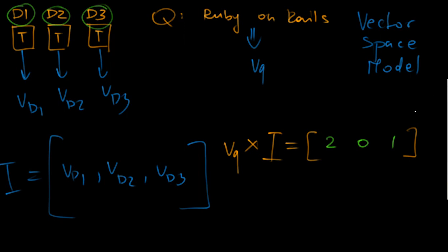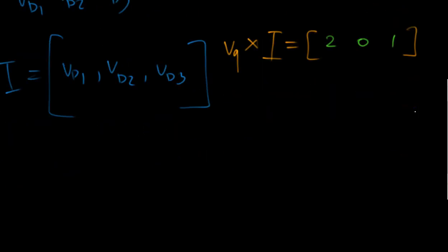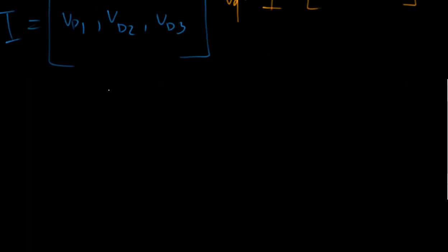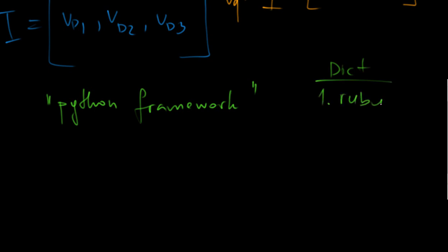Now you might be wondering how do we convert text into a vector in the first place? The way to do it is really simple. Say you have a text: Python framework. In order to convert this text into a vector, first you need a dictionary. For instance, we just have something random: Ruby, Python, framework, web.